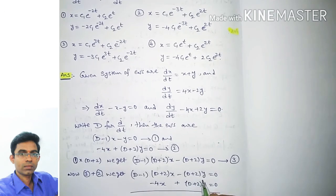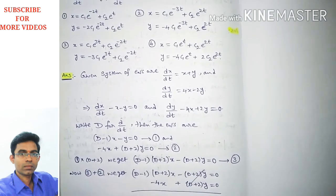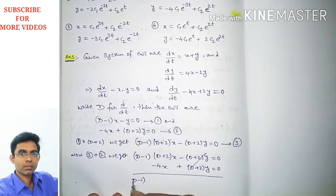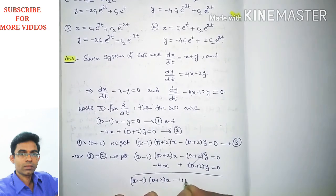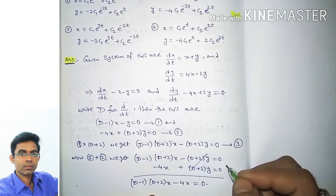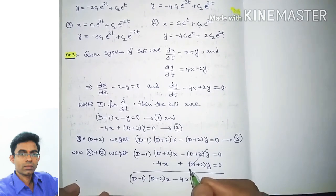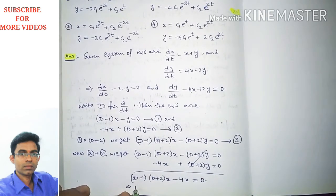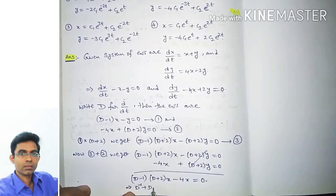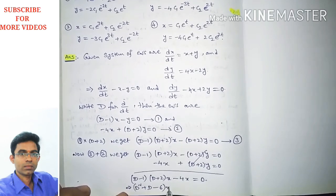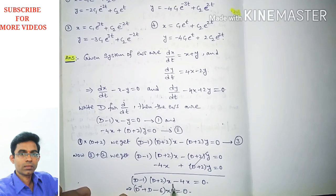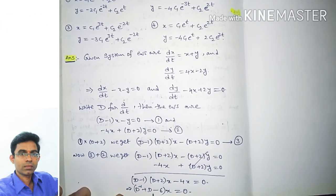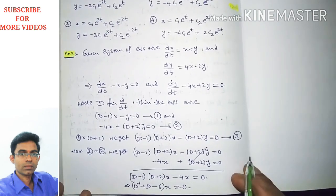After cancellation we are left with (D − 1)(D + 2)x − 4x = 0. Expanding: (D² + D − 2)x − 4x = 0, which simplifies to (D² + D − 6)x = 0.